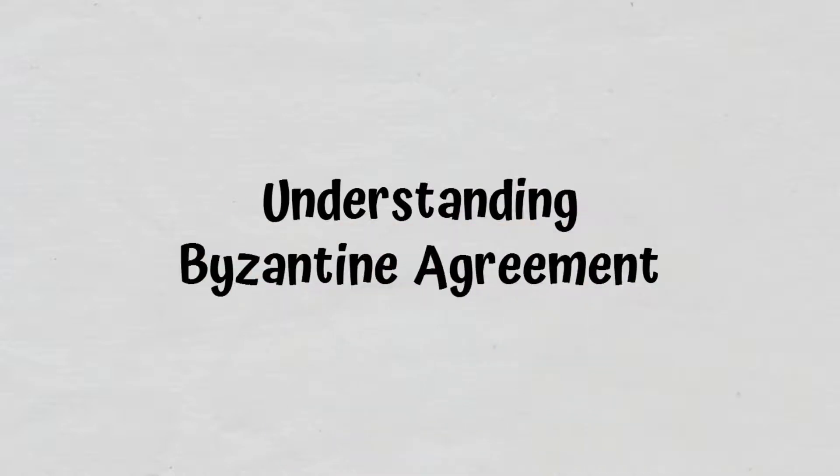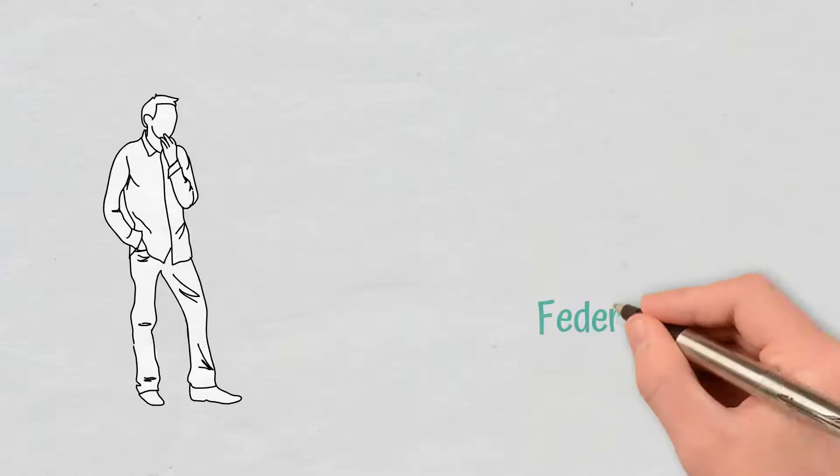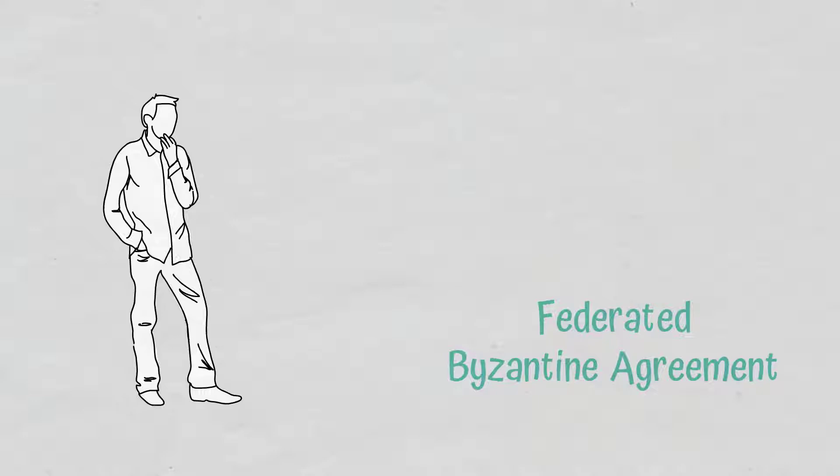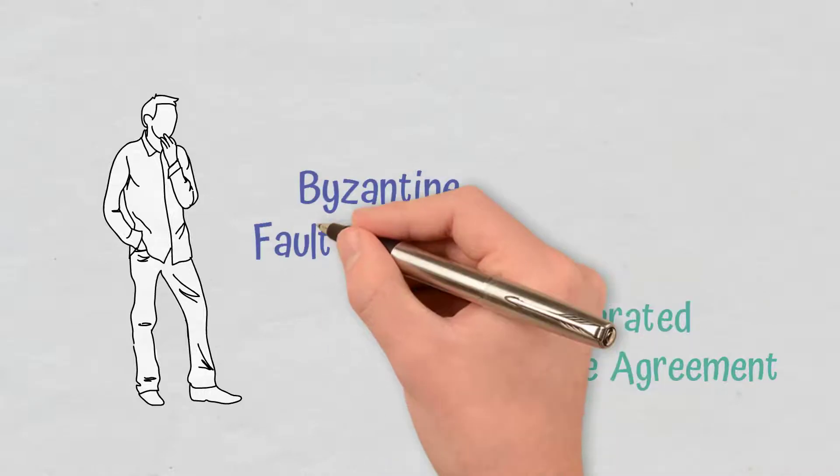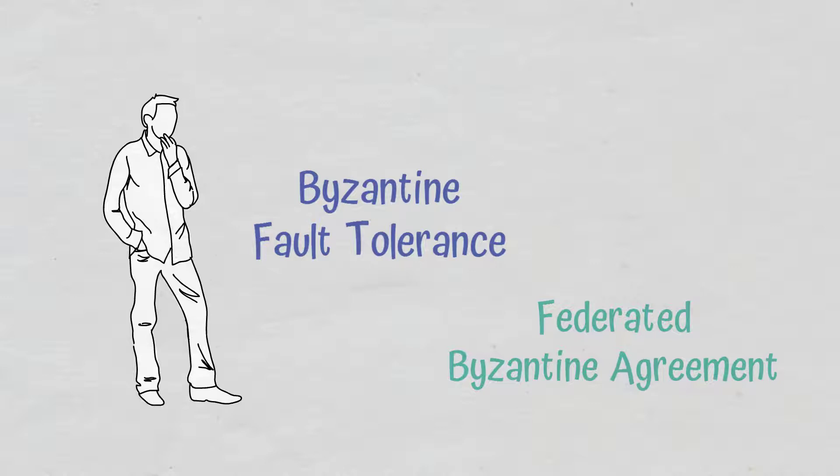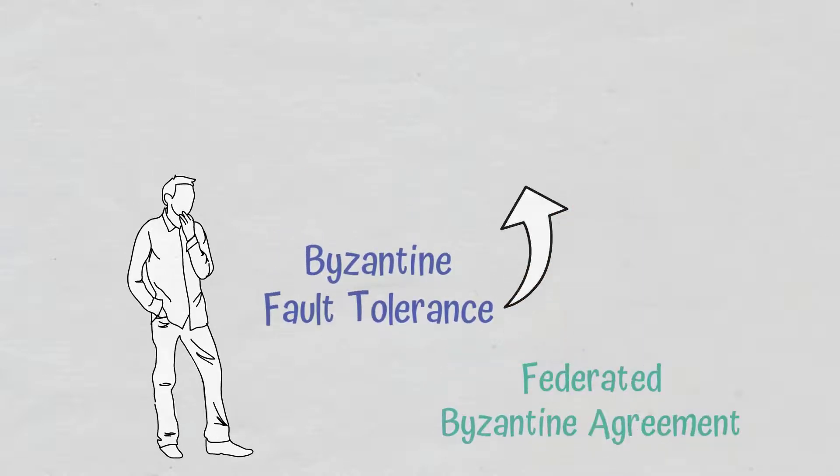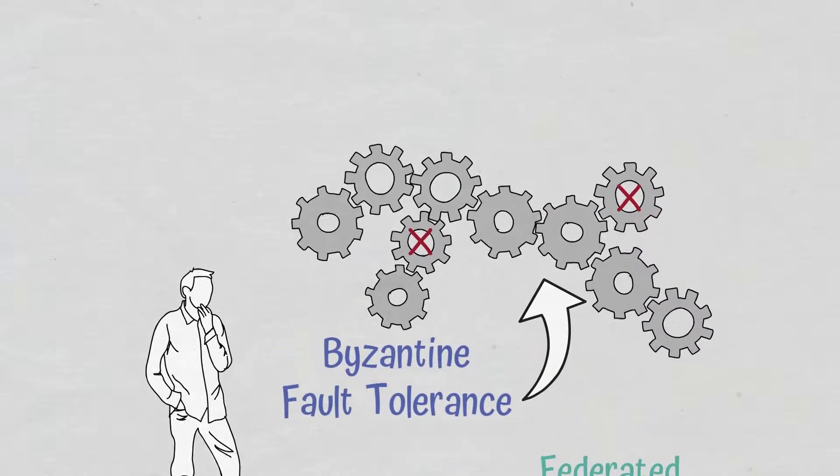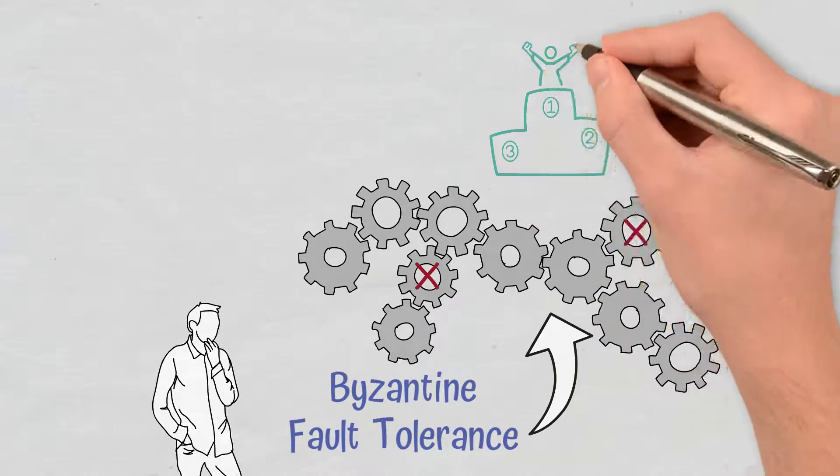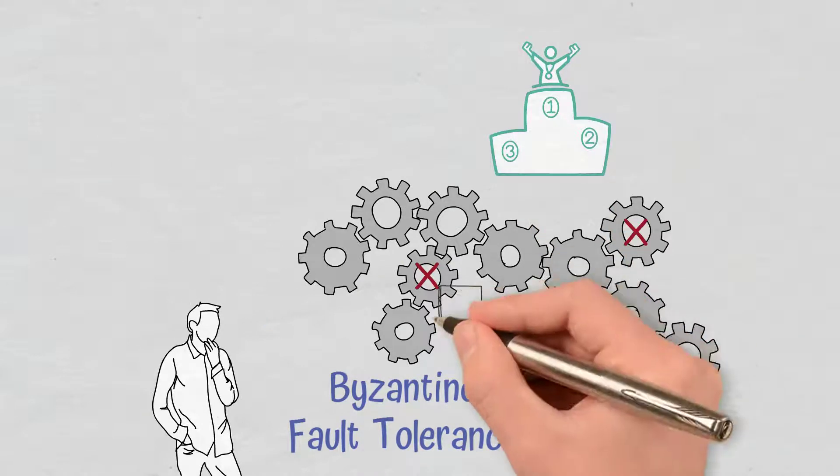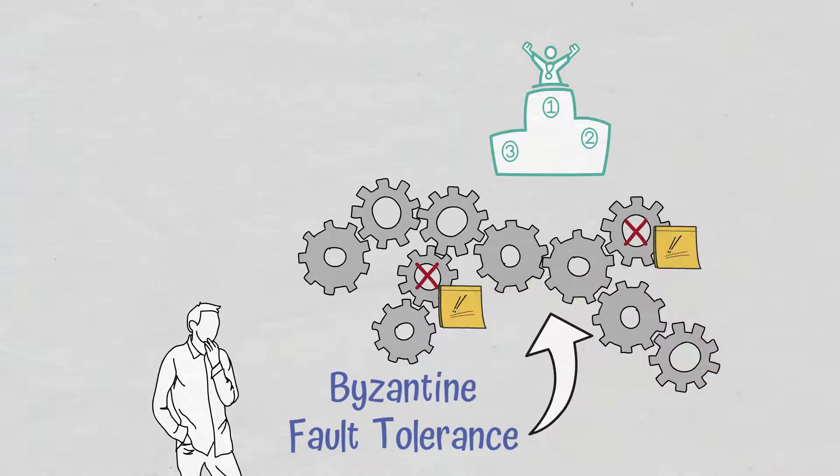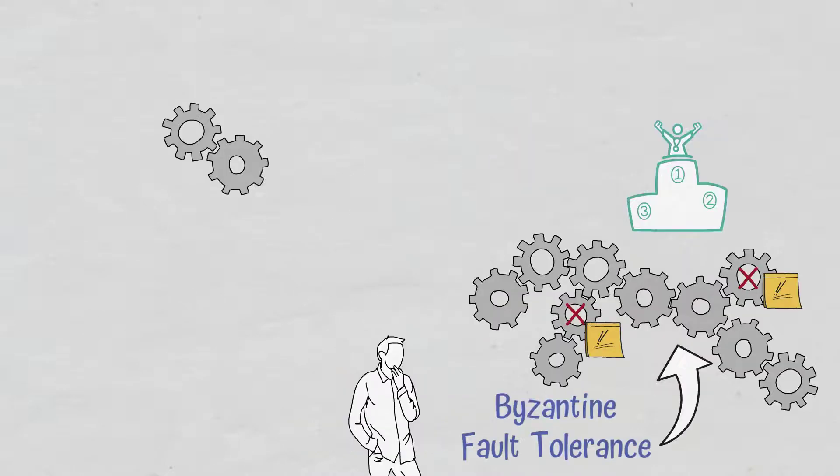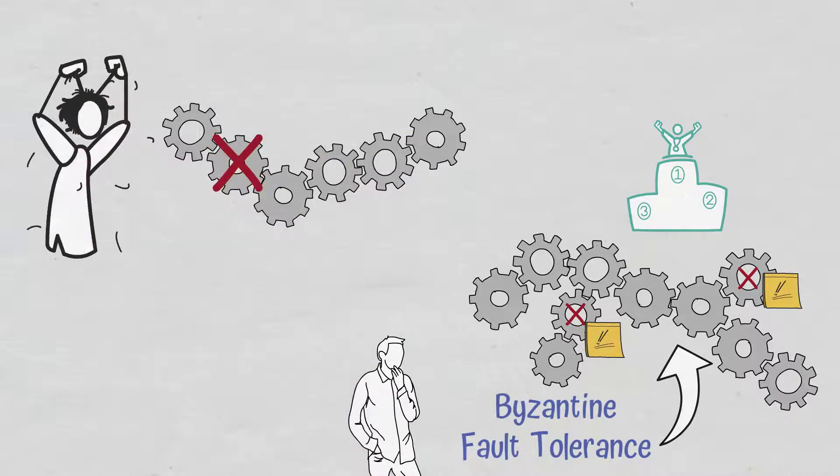Understanding Byzantine Agreement. To understand the Federated Byzantine Agreement, we must first take a look at Byzantine Fault Tolerance. Fault tolerance is the feature that allows the system to continue to function correctly in the event of one or more failures occurring within some of its components. The quality of the way the system operates may not decrease at all, or the decrease may be proportional to the severity of the failure. In comparison, in a system designed without this feature, even a minor failure can cause a total collapse.